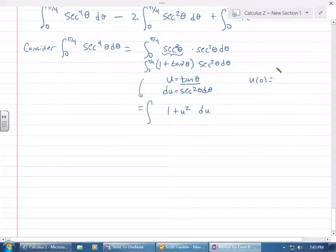That's tangent of 0. If you have to look it up, you've got it right here in the table. That's 0. And u of pi over 4 is tangent pi over 4. This is 1. So it goes from 0 to 1.